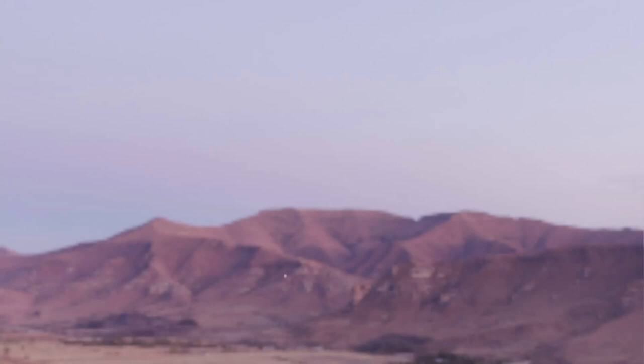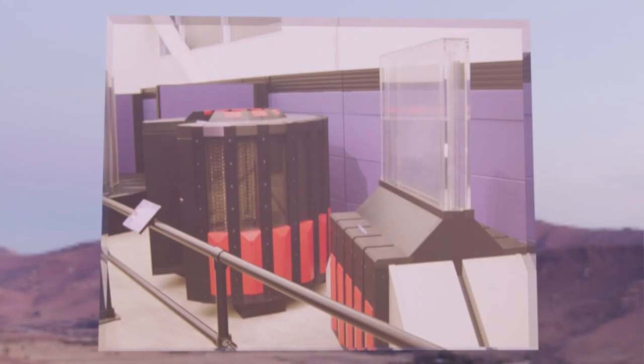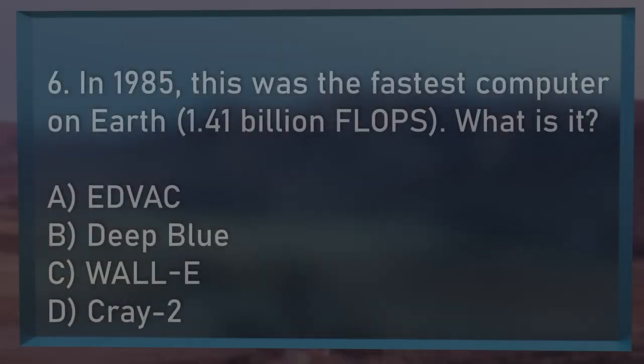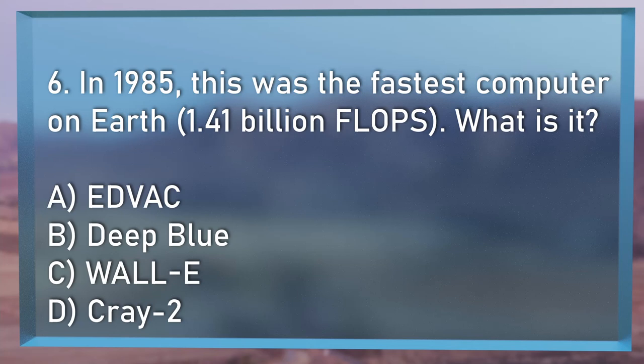Question number 6 — a pictorial question. Look at your monitors. You'll see a picture of a wonderful looking black and red object. In 1985, this was the fastest computer on Earth, with 1.41 billion floating point operations per second. What is this machine called? A, the EDVAC; B, Deep Blue; C, Wall-E; or D, the Cray 2?